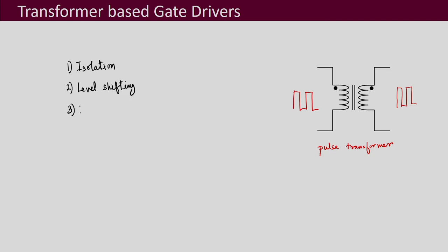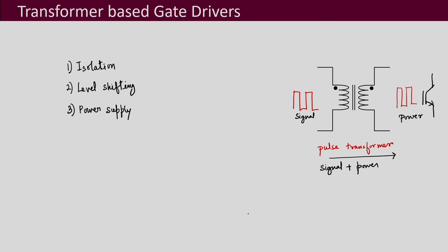Next, regarding power supply — you do not need a separate power supply, you do not need a separate DC-to-DC converter to supply your gate drive requirements. You can transmit signal as well as power using this transformer. So both signal plus power can be transferred through this transformer, meaning a separate power supply is not required.